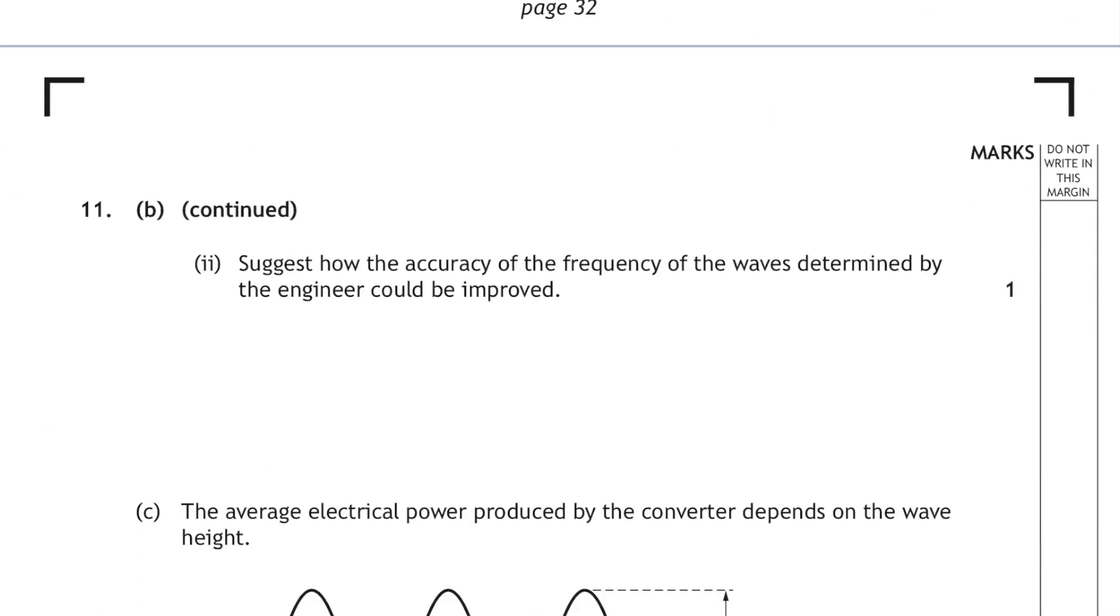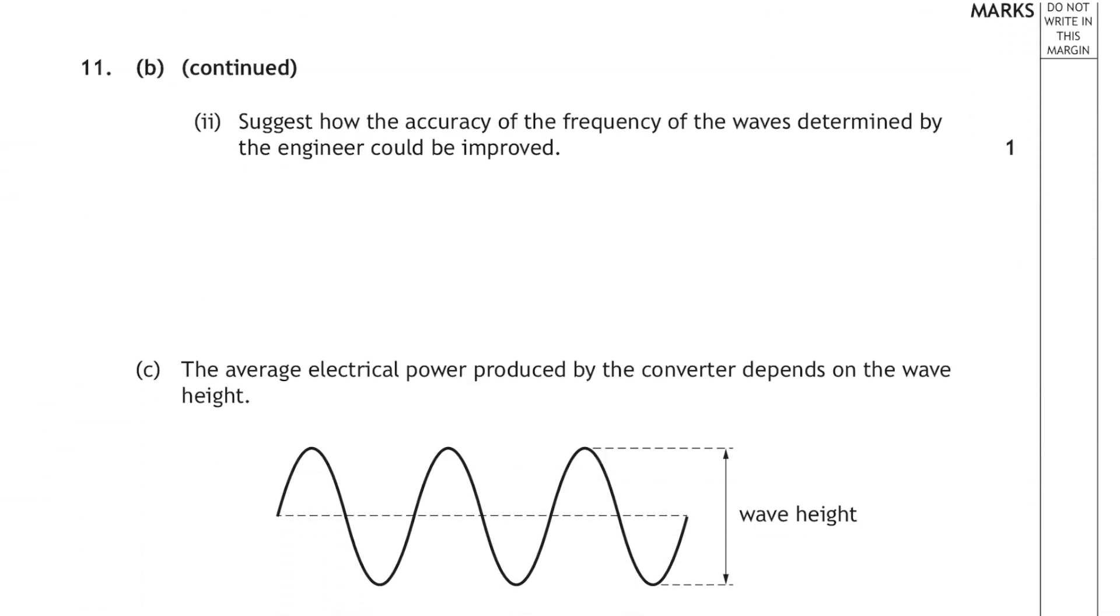Then 11 part B part 2 suggests how the accuracy of the frequency of the waves determined by the engineer could be improved. Well, if you measured the time for more than one wave, then you could do the number of waves divided by that longer time, and you would get a more accurate measurement of the frequency of the waves.